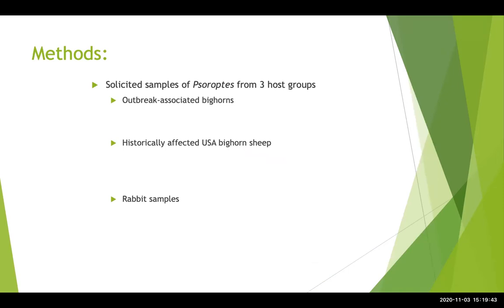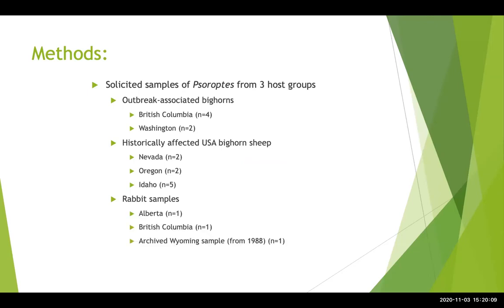For our methods, we looked for Sarcoptes samples from three different host groups. First were the outbreak-associated bighorn sheep, mostly in Canada but also across the border into northern Washington State — we got six samples from those animals. Next were historically affected USA bighorn sheep populations, with samples from Nevada, Oregon, and Idaho throughout the Hells Canyon area and central Idaho. Finally, we worked hard to obtain rabbit Sarcoptes samples: one from Alberta, one from BC, and one old archived sample from Wyoming.